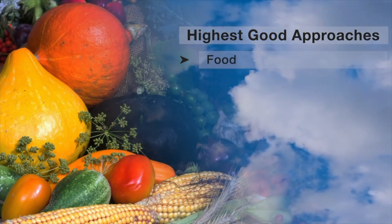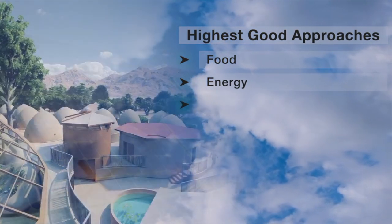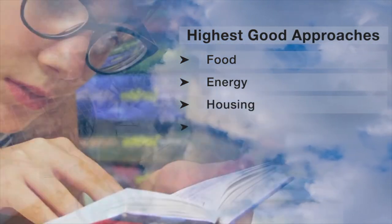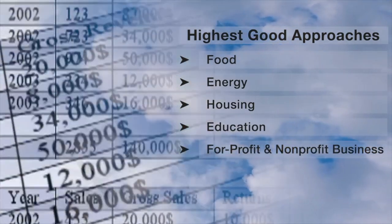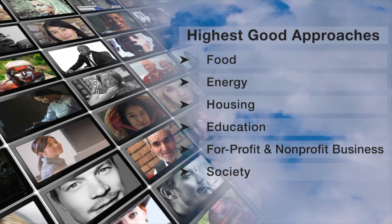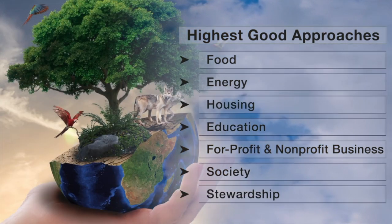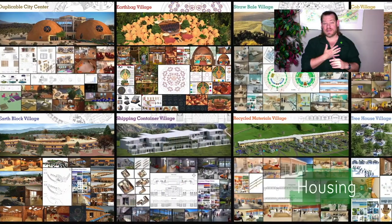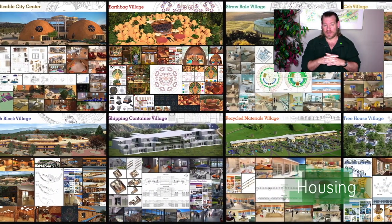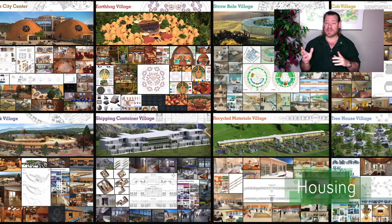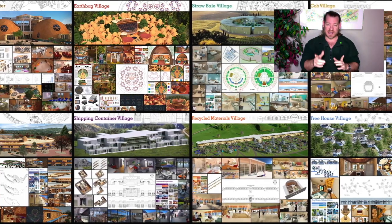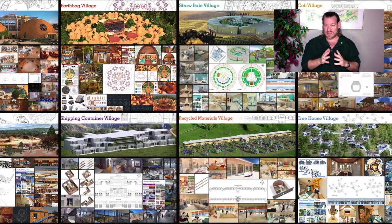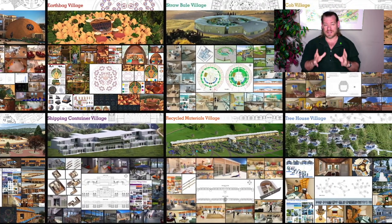This includes highest good approaches to food, energy, housing, education, for-profit and non-profit business creation, society, and true earth stewardship. My name is Jay Sable and I'm the Executive Director of the One Community 501c3 nonprofit organization. One Community is bringing together people with the consciousness and desire for the highest good of all life on this planet to build sustainable, regenerative, and self-replicating teacher demonstration hubs as a pathway to global sustainability.